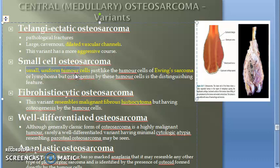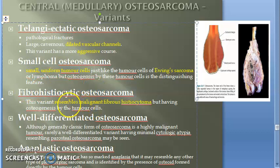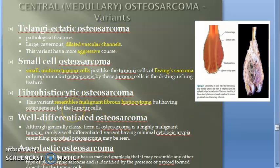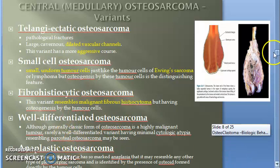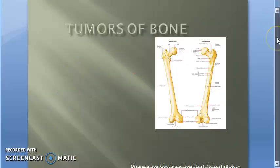Small cell osteosarcoma resembles Ewing sarcoma, but Ewing sarcoma affects the diaphysis while osteosarcoma affects the metaphysis. Fibro histiocytic osteosarcoma resembles malignant fibrous histiocytoma — do you know where you saw this fibrous histiocytoma?